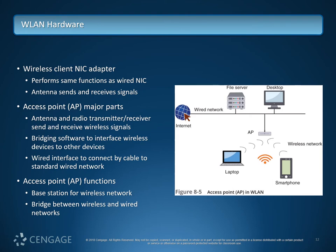The access point has a few major components: the antenna and radio transmitter/receiver, bridging software, and the wired interface to pass it back to the standard wired network. The access point's functions are as a base station to send and receive signals and to bridge the wired and wireless networks — because wireless networks can't just communicate on their own local segment; they have to pass information back to the internet at large.